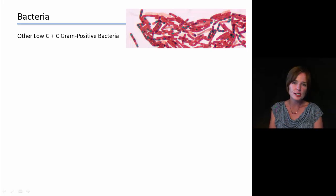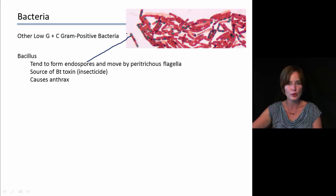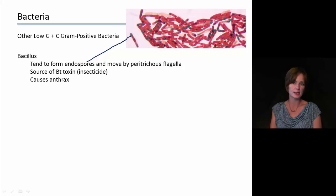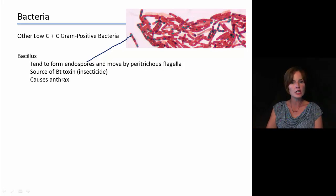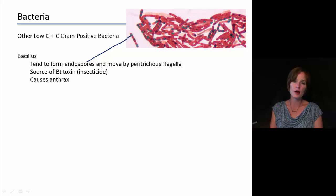Among other low-GC gram-positive bacteria, Bacillus is a large group that tends to form endospores — seen in this microscope image stained to reveal them — and moves using peritrichous flagella, meaning many flagella on the cell surface. One commercial importance of Bacillus is that they produce Bt toxin, an insecticide. Many crop plants have been genetically engineered to produce Bt toxin themselves, reducing the need to spray insecticide. On the negative side, Bacillus is responsible for causing anthrax, a very serious illness.